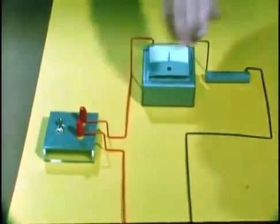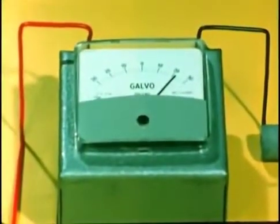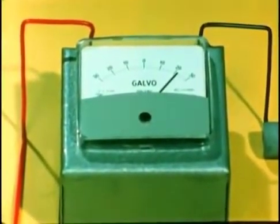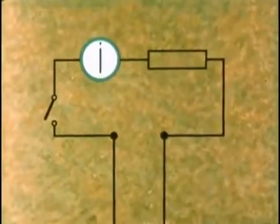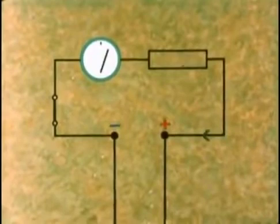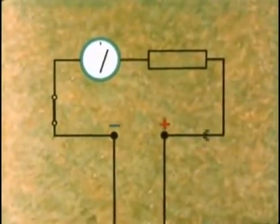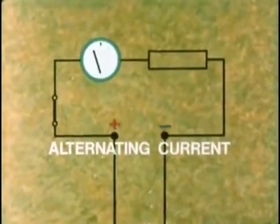In real life the direct current causes a steady reading to one side of zero on the measuring instrument. But current also exists in a different form in which the direction of the current goes first one way and then the other, and of course is called alternating current, AC.